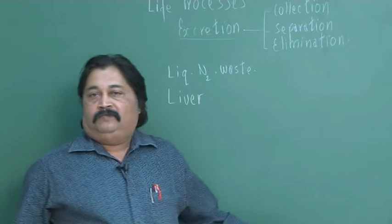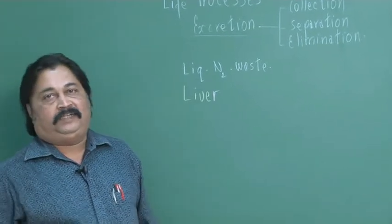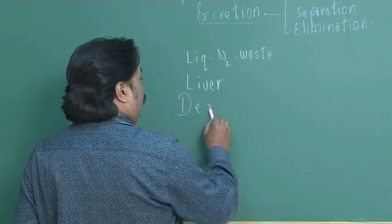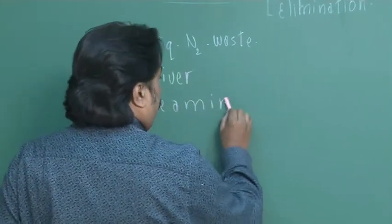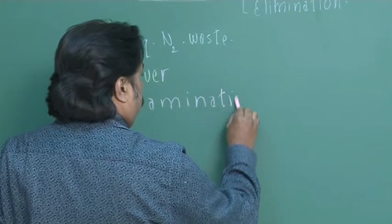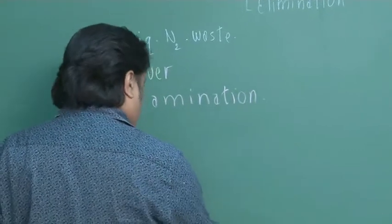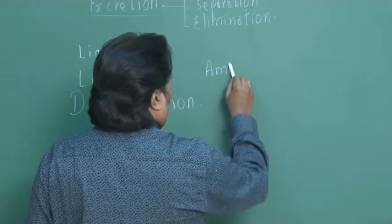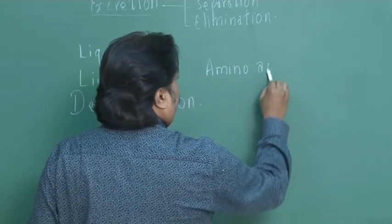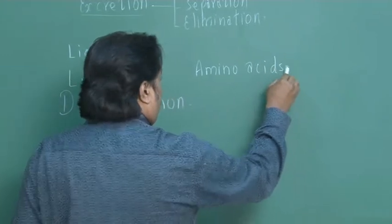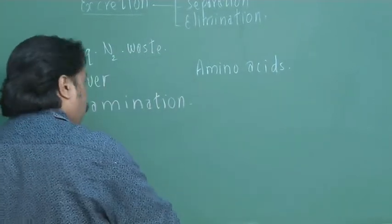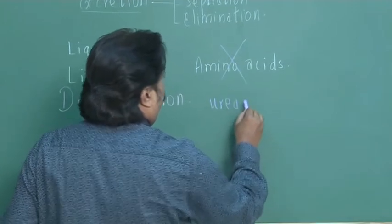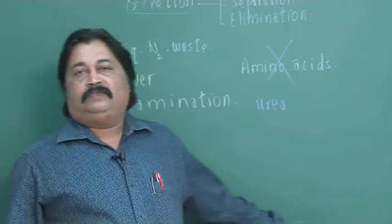In our liver, a process is set in, that process is called de-amination. What happens in the liver? Certain substances, which are proteinaceous substances like amino acids, these amino acids are metabolized. They are broken down and urea is produced as by-product.